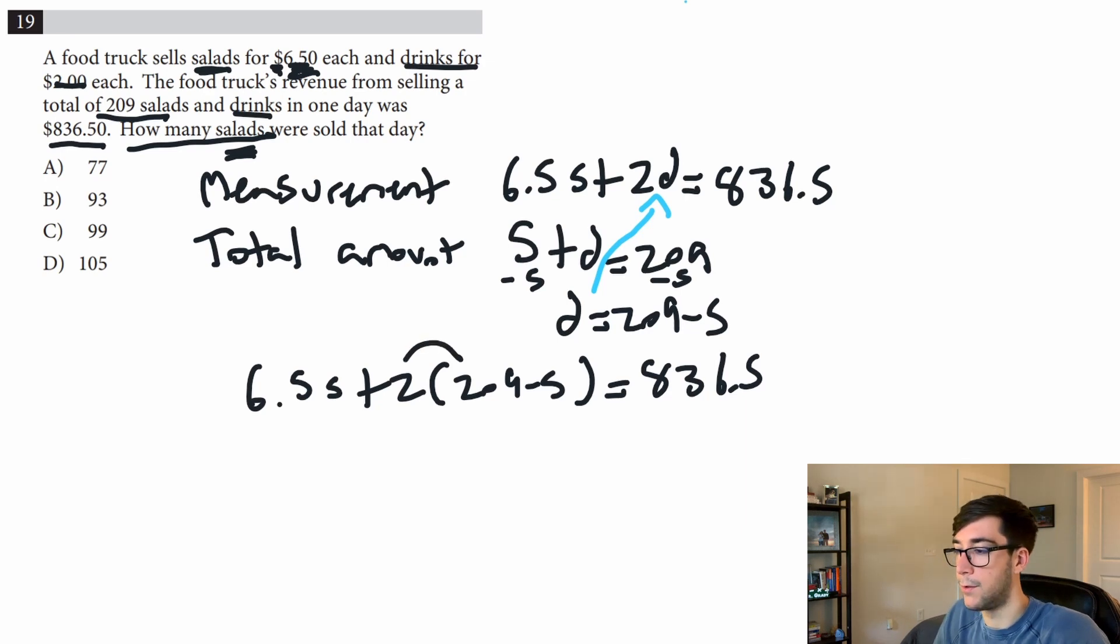Start by distributing this 2: 6.5s + 418 - 2s = 836.5. Combine like terms, get 4.5s. Subtract 418 from both sides.